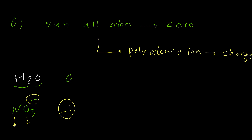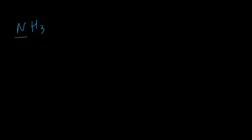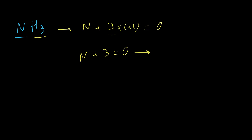Let's look at some examples. For the first example, I'll calculate the oxidation number of nitrogen in ammonia, NH3. It's a neutral compound, so the sum of oxidation numbers should be 0. We don't know nitrogen's oxidation number, so we write N. Hydrogen is +1 and there are 3 hydrogen atoms, so 3 times +1. Then N + 3 = 0, which gives nitrogen = -3. So the oxidation number for nitrogen in ammonia is -3.